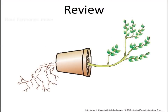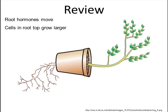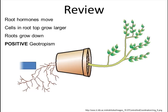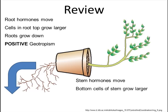In review: root hormones move when the plant gets tipped over. The cells in the root tip grow larger, the roots grow down, and this is called positive geotropism. When the plant tips over, stem hormones move. The bottom cells of the stem tip grow larger, the stem grows up, and this is called negative geotropism.